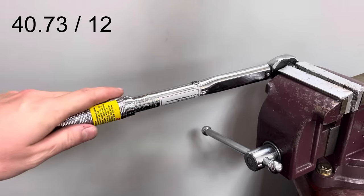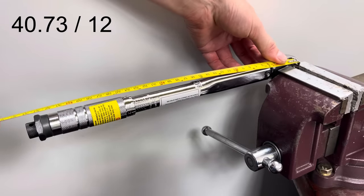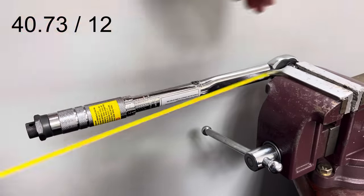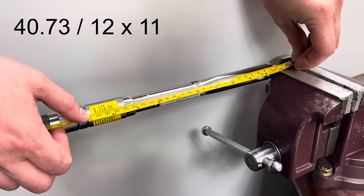So, we take that weight, we divide it by 12, and then we need to decide on, again, the lever length, how long we're going to go from the middle of the square drive to about the middle of the handle. In this case, let's have a quick look, we are 11 inches.